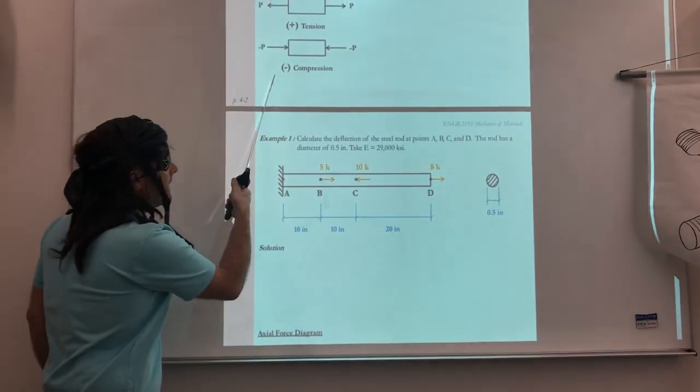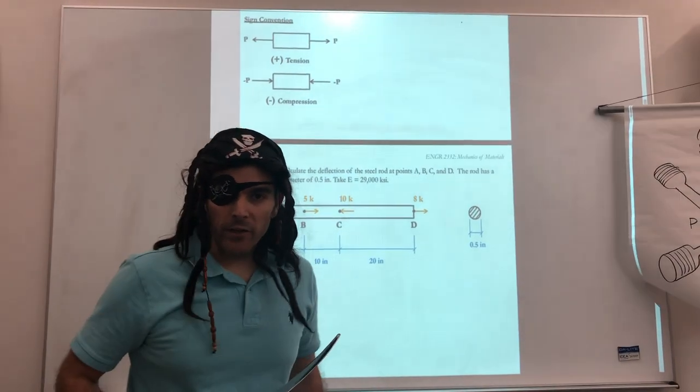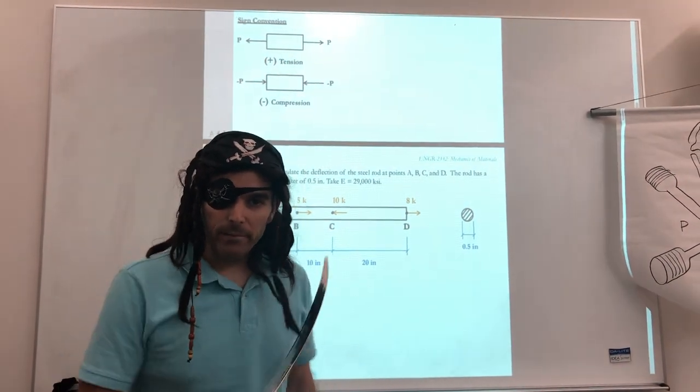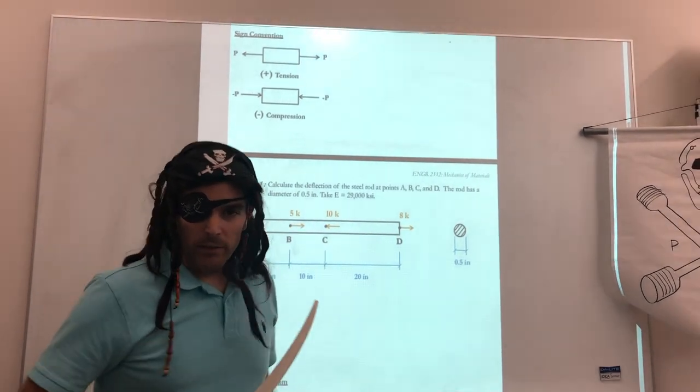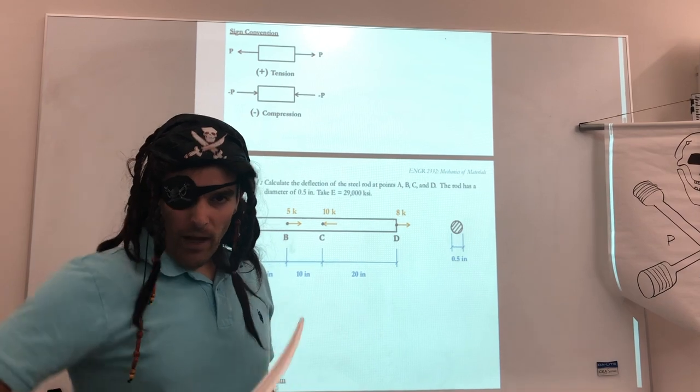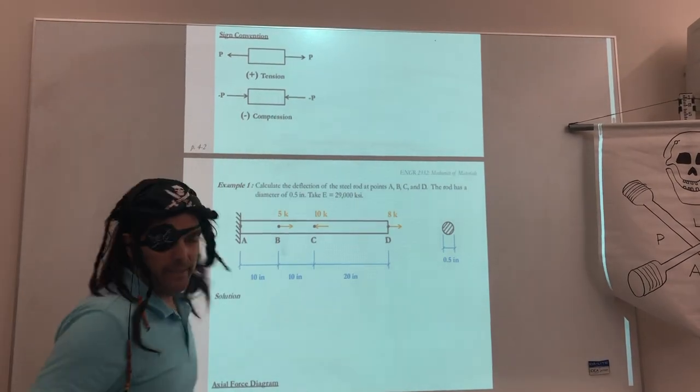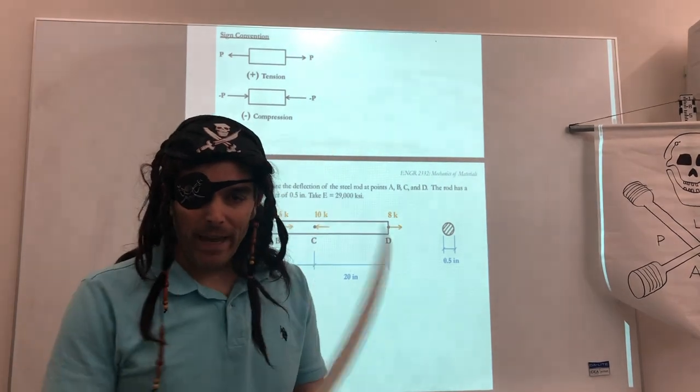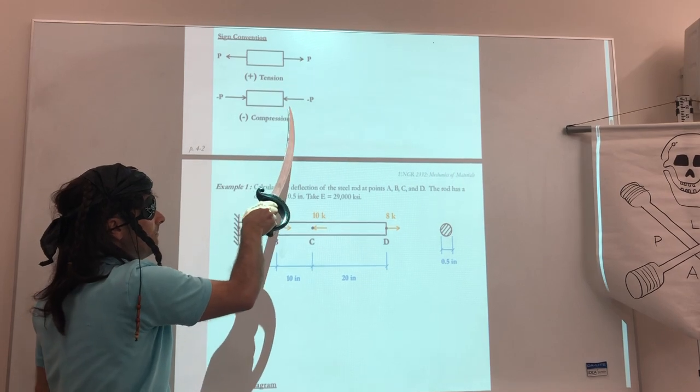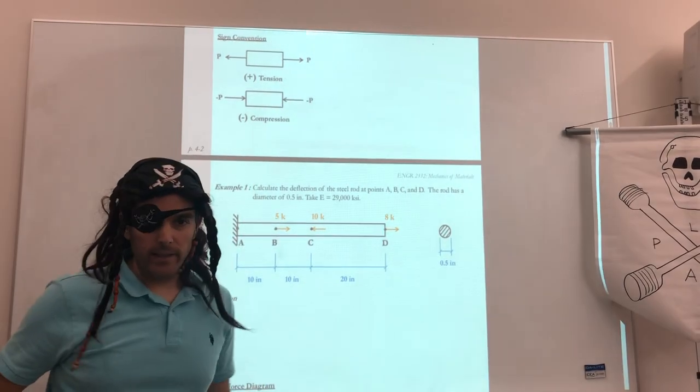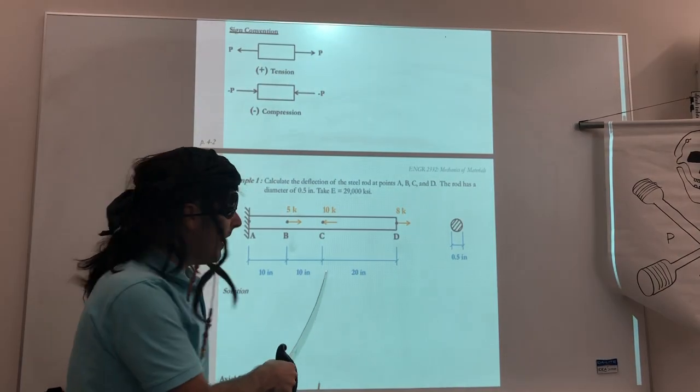Before we do that, we have to first define some sort of sign convention. Now of course, if you took statics class previously, you probably used this sign convention. But regardless, this is the sign convention that we will live by, the code we will abide by as pirates. Tension, positive. Tension represents if we make a cut, the force is directed away from the cut. Compression force is directed towards the cut. This is our sign convention. So let's apply that to our problem.